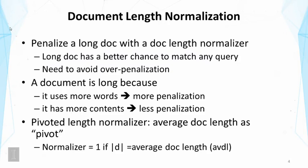We also need to be careful in avoiding over-penalizing long documents. On the one hand, we want to penalize long documents. But on the other hand, we also don't want to over-penalize them. The reason is because a document may be long for different reasons. In one case, the document may be long because it uses more words — for example, a full-text article of a research paper uses more words than the corresponding abstract. This is the case where we probably should penalize the matching of long documents, because long papers generally have a higher chance of matching query words. Therefore, we should penalize them.